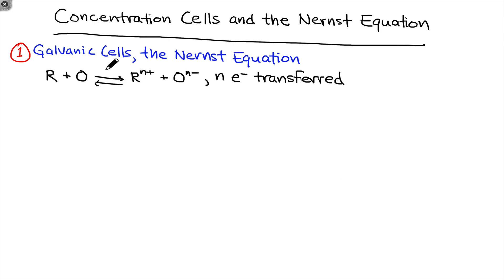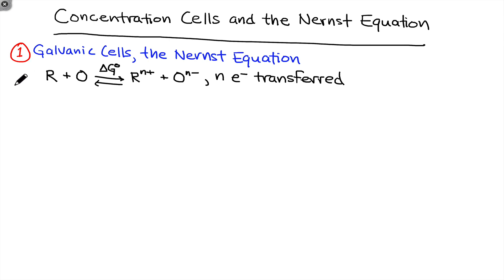In general, this is a reversible process associated with some ΔG value. The key to converting that free energy difference into a voltage involves, in an engineering sense, separating the oxidation and reduction processes in space so that electrons have to travel across a wire in order for the redox reaction to occur.